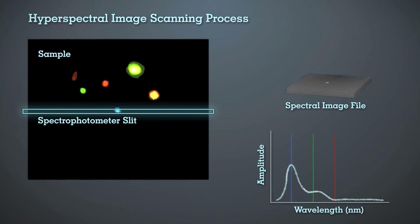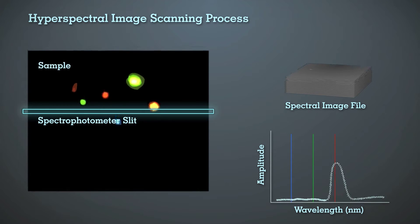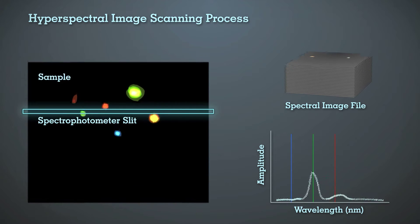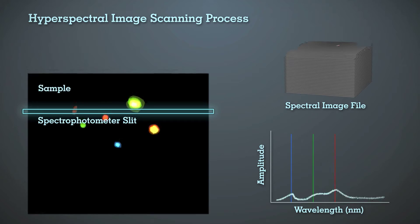The spectrophotometer has an integrated CCD, which collects the sample reflectance spectrum from every pixel of the scanned image. To create a hyperspectral image, the automated microscope stage pushes the sample across the spectrophotometer field of view.